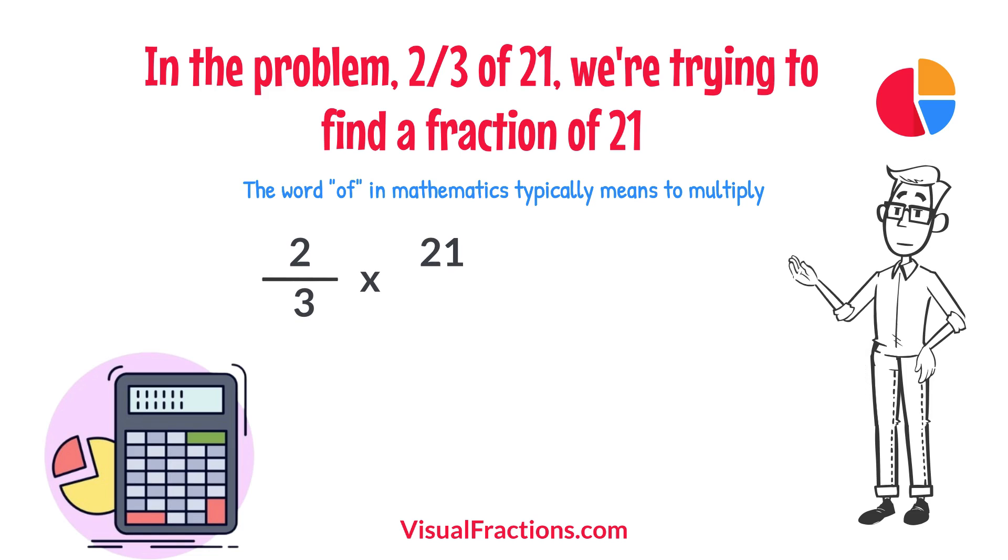Two-thirds times 21. To simplify the calculation, we first convert our whole number into fraction form, writing 21 as 21 over 1. This transformation makes it easier to work with our numbers as fractions.